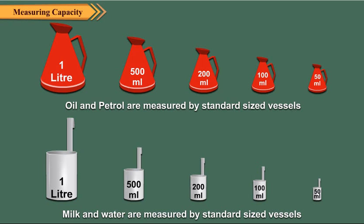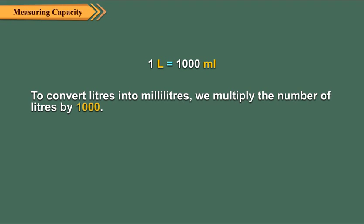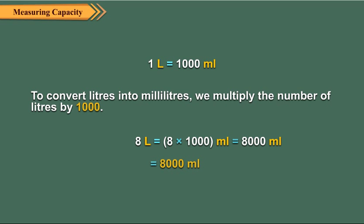Children, now let us find the relation between liter and milliliter. One liter has 1000 milliliters. To convert liters into milliliters, we multiply the number of liters by 1000. So in this way, let us convert 8 liters into milliliters.